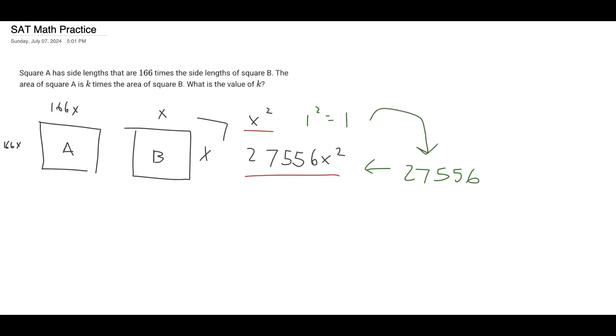We can clearly see the relationship here that the area of square A is 27,556 times. So that is our value for k right there. You don't need to have that x there. Yeah, there's your answer. Thank you.